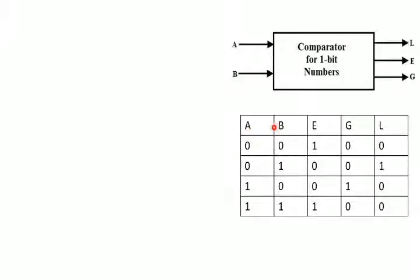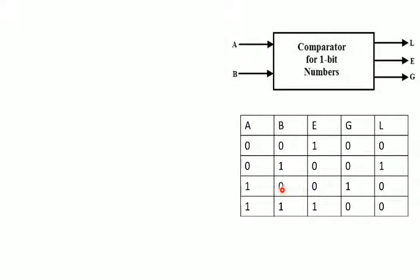Here you can see we have two inputs and three output terms. For the two input terms we have four combinations: 0 0, 0 1, 1 0, and 1 1. According to their comparison we get either of the outputs as 1. In the first and last case, equal is going to be 1 because A equals B. In the second condition where A is 0 and B is 1, A is less than B, and in the third condition A is greater than B.